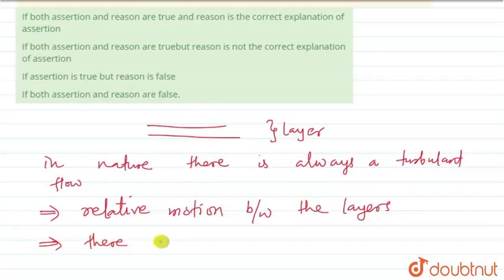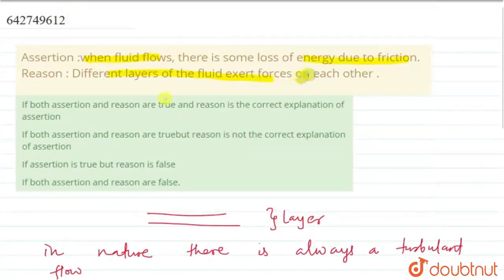Whenever there is relative motion between any two surfaces, there will be friction. That's why there will be some loss due to friction—some loss of energy. Different layers of fluid exert forces on each other, this is correct. So our answer will be: